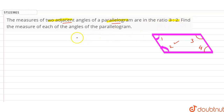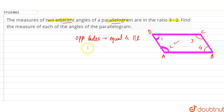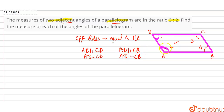The property of a parallelogram is that opposite sides are equal and parallel. Let's say ABCD is a parallelogram. So AB is parallel to CD and AB is equal to CD. Also, AD is parallel to CB and AD is equal to CB. Here, the two adjacent angles are angle 1 and angle 2. Since CD is parallel to AB, AD acts as a transversal.